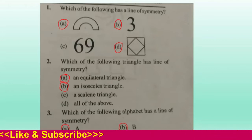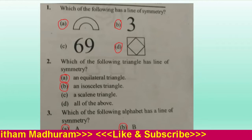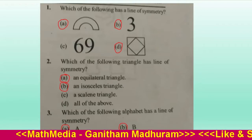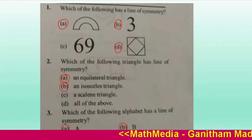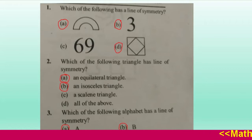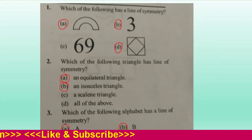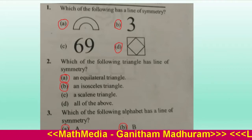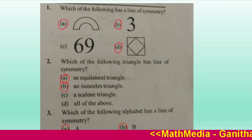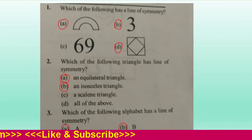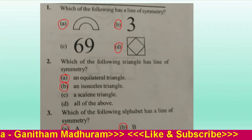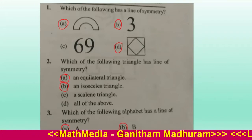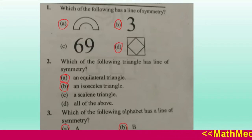Which of the following triangles has lines of symmetry? First option: an equilateral triangle, which has a line of symmetry. An isosceles triangle also has a line of symmetry. A scalene triangle doesn't have a line of symmetry. Option D, all of the above, is not satisfied. So the correct options are A and B.